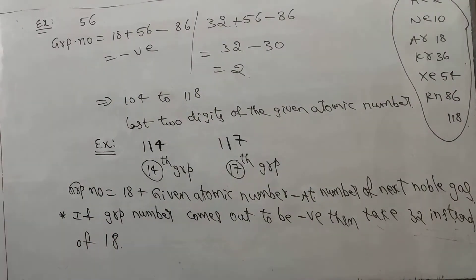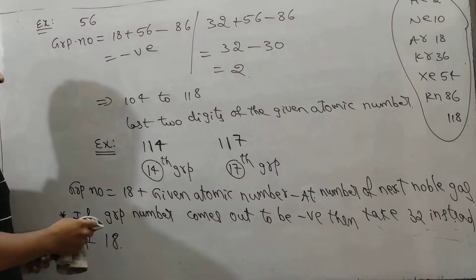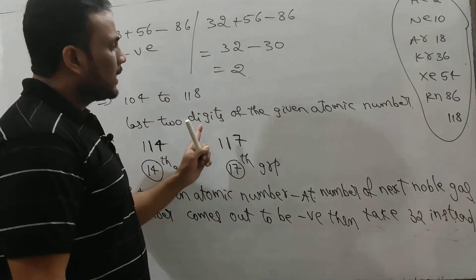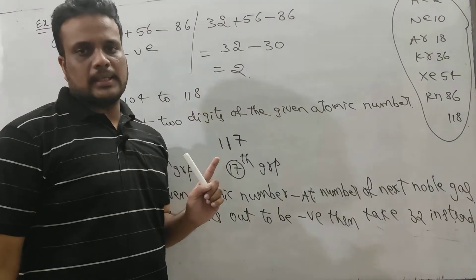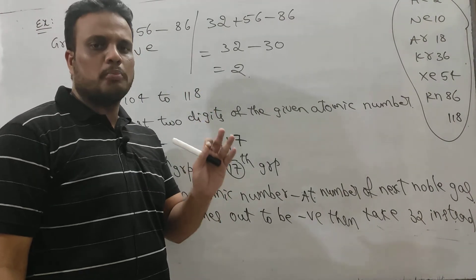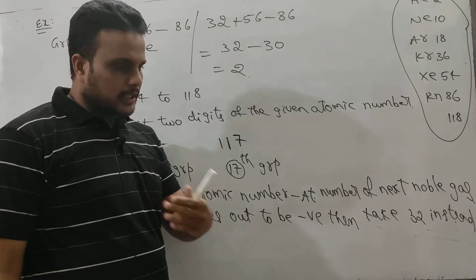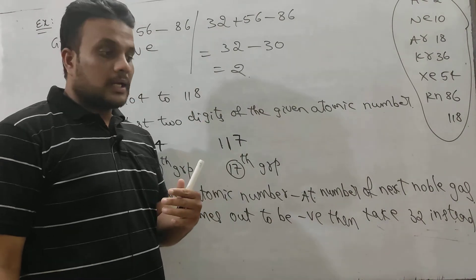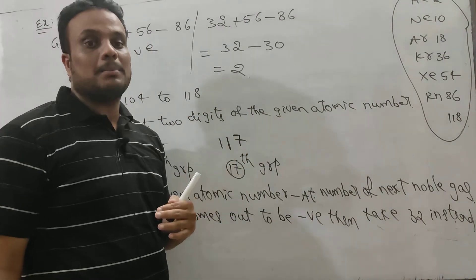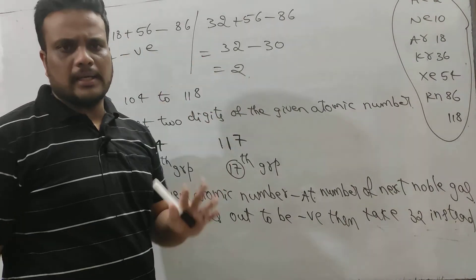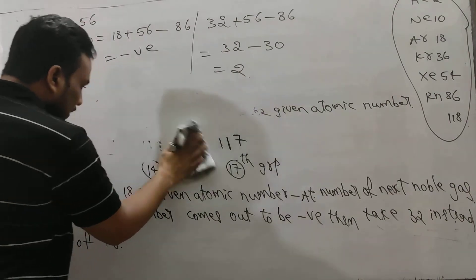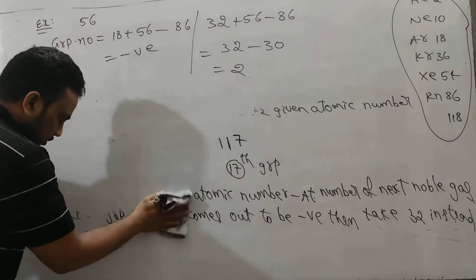So this is a very simple trick. But atomic numbers 57 to 71 and 89 to 103 you have to memorize. Actually, by studying and attempting a number of examinations, these will automatically be memorized. But these tricks we have to practice.